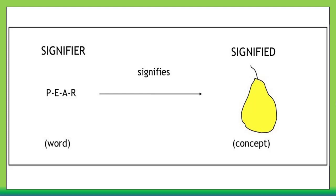For example, the word 'pear' — P, E, A, R — is the signifier. What this word means in our minds, the concept, is the signified. When you think of a pear, the fruit comes to your mind — that is the concept, the signified.